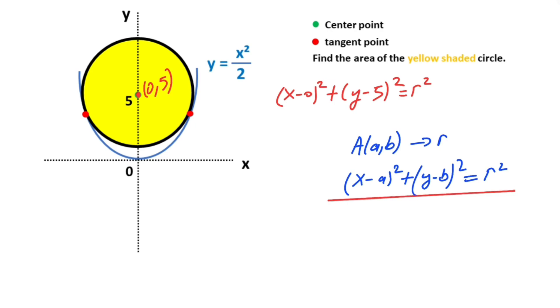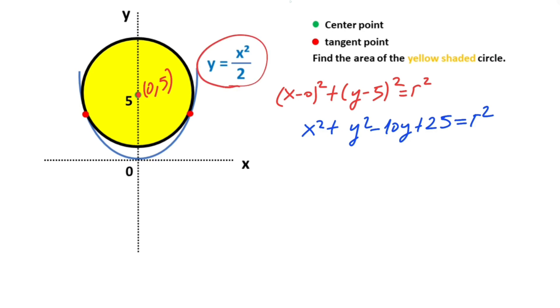This is the equation of the circle with its center and radius known. So let's clear here and continue. Therefore, x² + y² - 10y + 25 = r². This is the yellow circle equation. And then we know that the equation of the parabola is given as y = x²/2, so 2y = x².